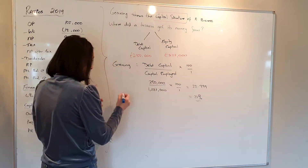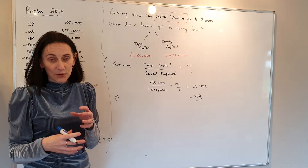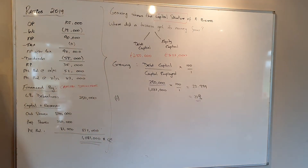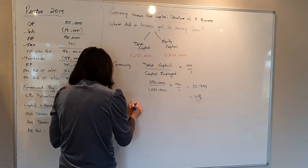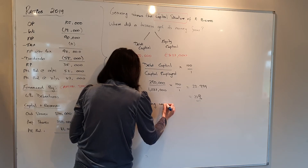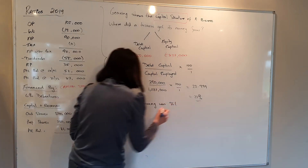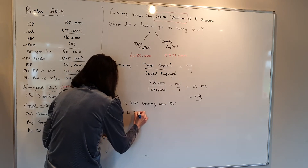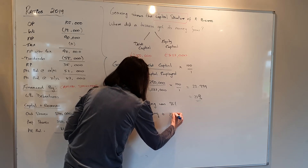The second step is the same structure we used for dividend policy. Step one: comment on the gearing ratio from last year. Looking at the exam question, in 2017 gearing was 56%. Step two: state what it is this year — in 2018, gearing is 23%.